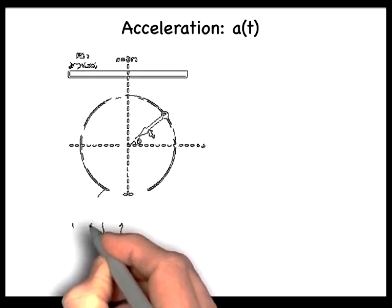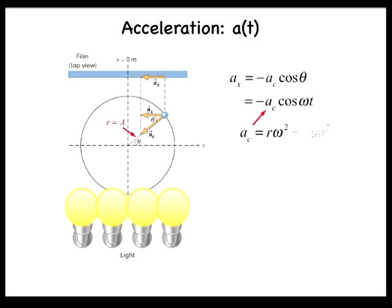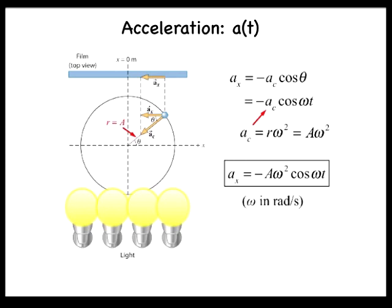We now use the reference circle to analyze the acceleration. Since the object is undergoing uniform circular motion, there is only a centripetal acceleration, which points radially inward. The x component of this centripetal acceleration is ax equals negative ac cosine theta, which equals negative ac times cosine omega t. Recall that the centripetal acceleration is given by r omega squared, which equals a omega squared since r is equal to a. Therefore, the x component of the acceleration is given by ax equals negative a omega squared cosine omega t, where omega is in radians per second. The maximum acceleration occurs when cosine omega t equals 1, so a max equals a omega squared.